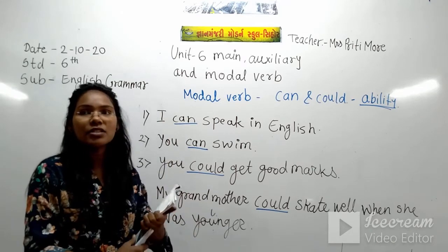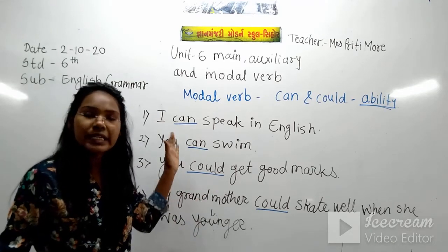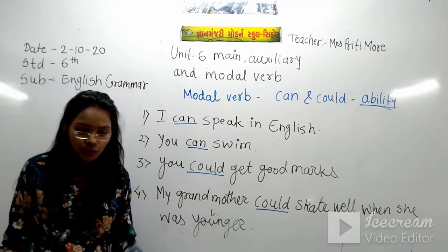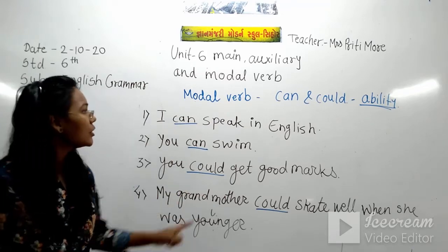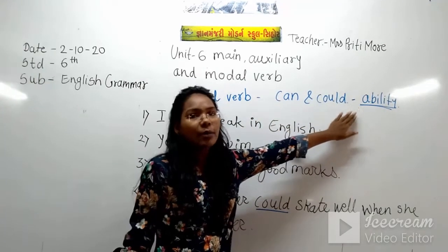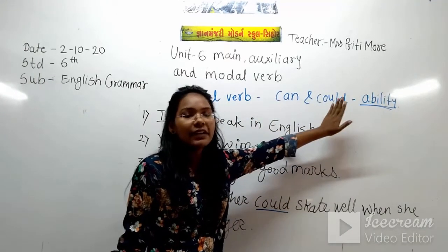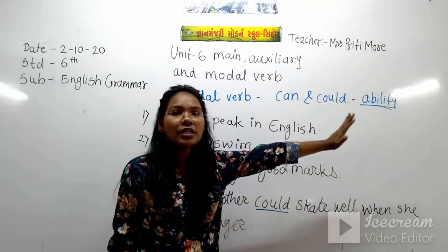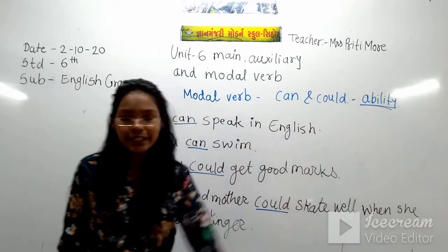You just write down all four examples in your notebook. We use can and could to show ability.